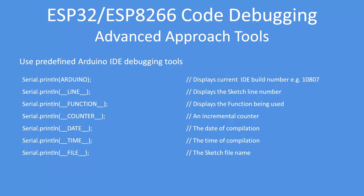Counter is an incremental counter that gets reset every time you enter a function, so if you're in a function it'll start from zero, one, two, three, four, five, six. If you come back to your main routine and call the function again, it gets reset to zero. DATE is the date of compilation, TIME is the time of compilation, and FILE is the sketch file name used — it embeds that into the code as a handy reminder of what program was actually compiled.